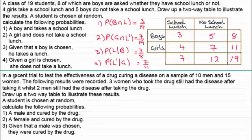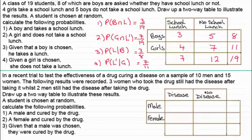Now I've got another example — you might like to pause the video, read through it, and give it a go. When you come back I'll take you through the worked solutions. For this one I'd draw up a table with male and female as columns, and disease and no disease as rows — though you could label it no cure and cure. We'll insert our numbers into this.